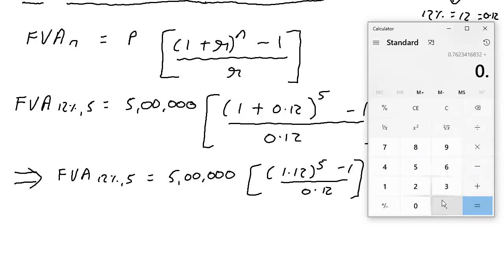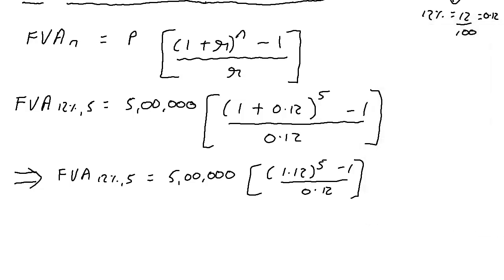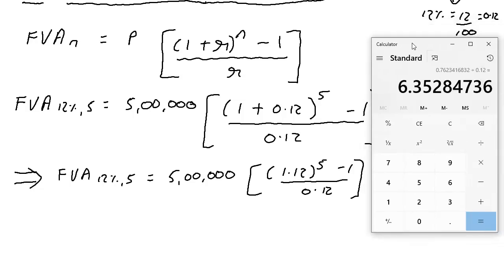From that I subtract one and I divide by 0.12, and this will give me what was called the compound value factor annuity in the previous question.